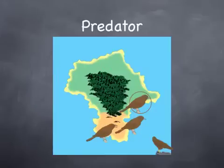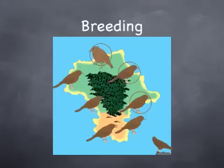Predator comes along, wipes out that. These three birds breed and create this population — two birds have the genetic trait for being pudgy but are not expressing it, and one is expressing the trait.